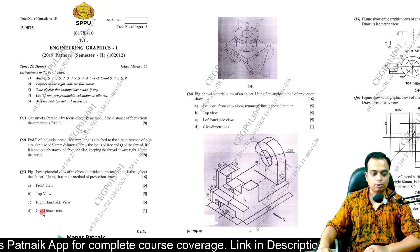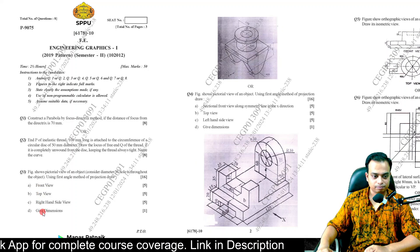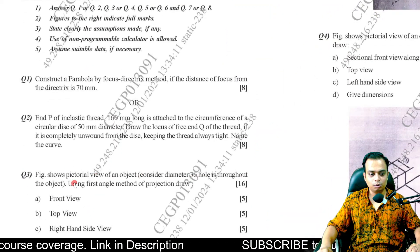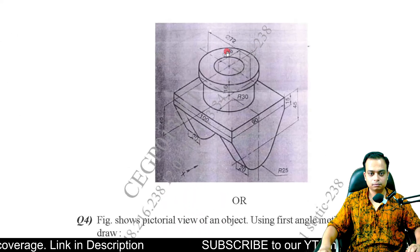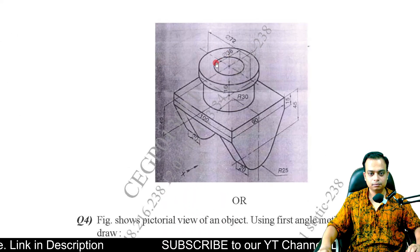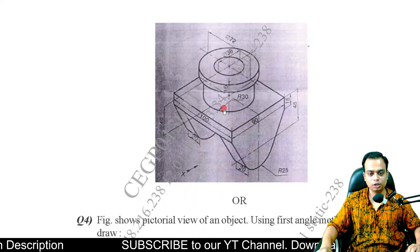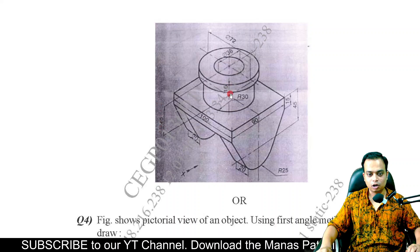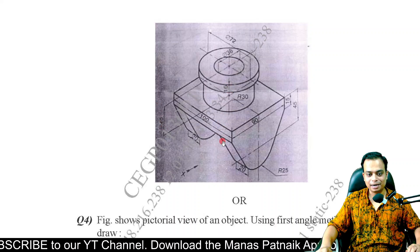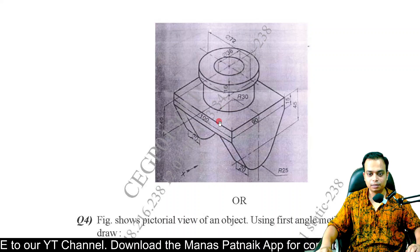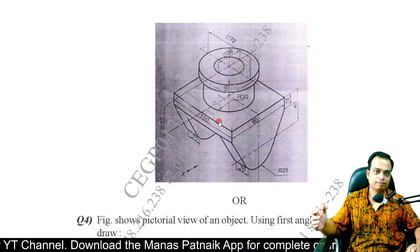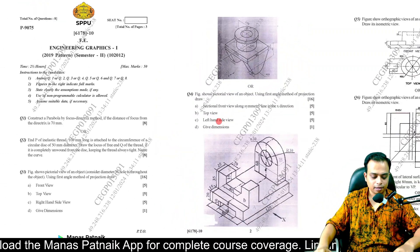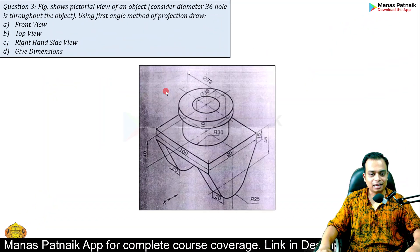Here we need to make the front view, top view, and right-hand side view, and also provide the dimensions. Please note: a diameter 36 hole goes throughout the object. The cylindrical tube has a height of 40, and the plate has a thickness of 15, so 40 plus 15 makes 55 — the overall depth of the hole throughout the object.